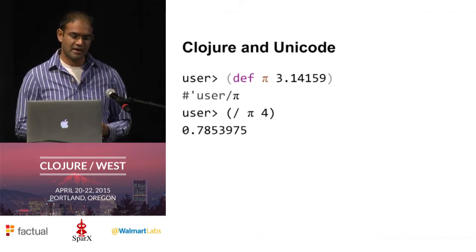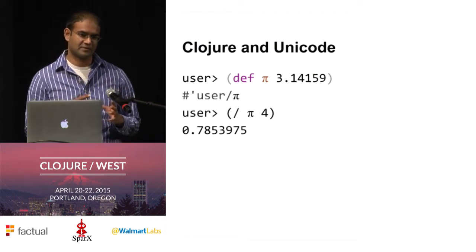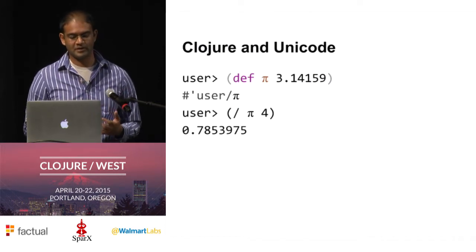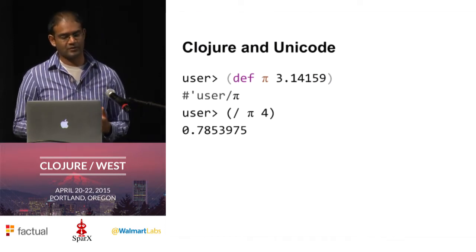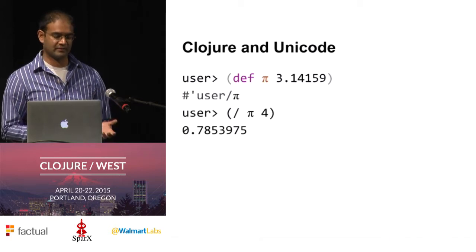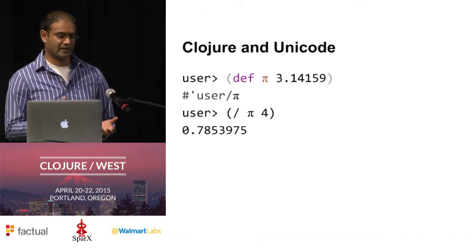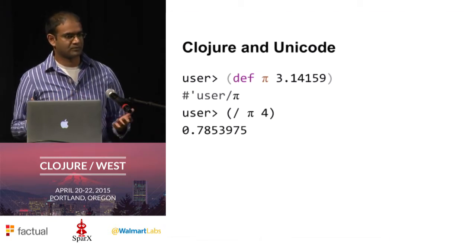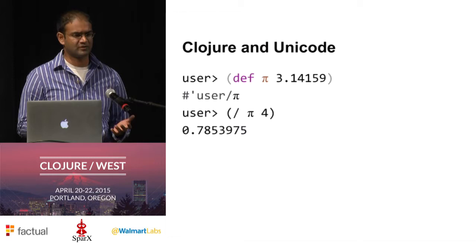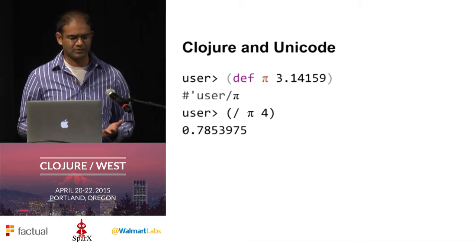I took a slight diversion — I was reading a Scala book that talked about how the Scala compiler can understand Unicode, so you can write your identifiers in any language. I thought, well, Clojure and Scala are similar languages, so let me try this out in Clojure.